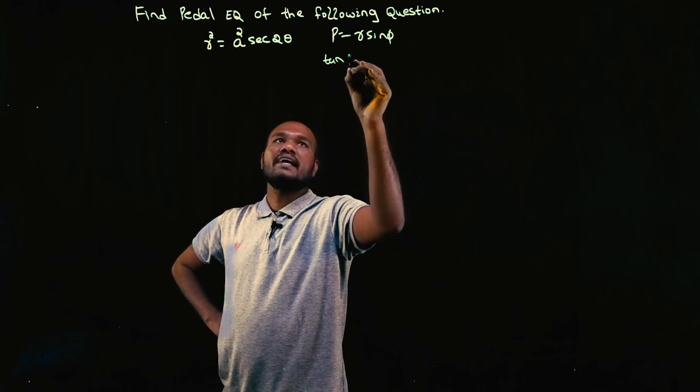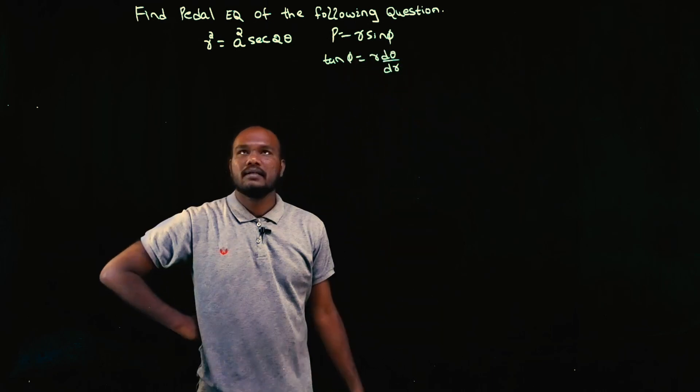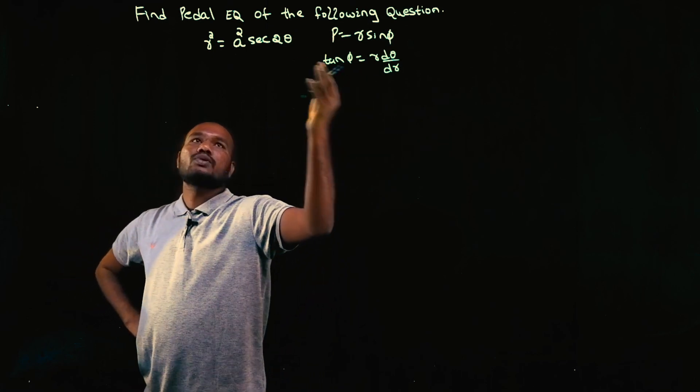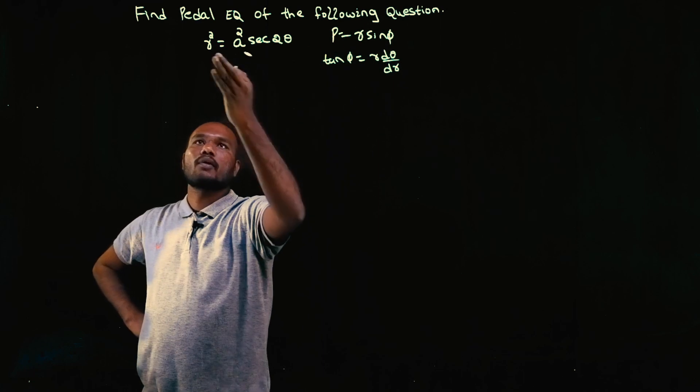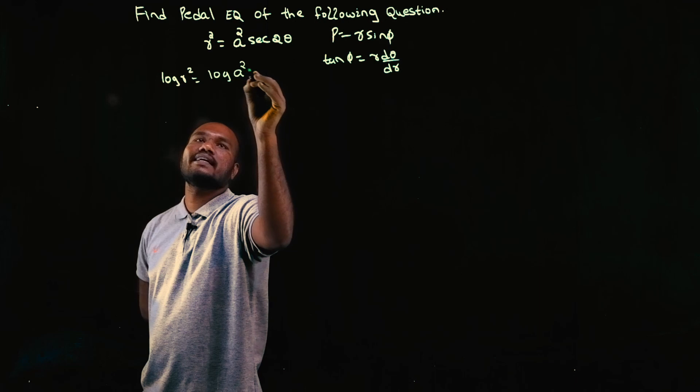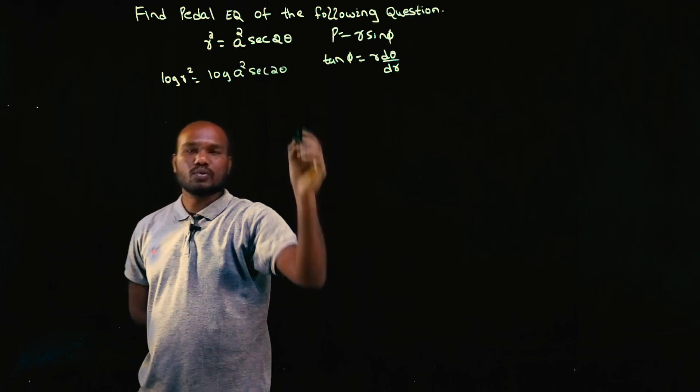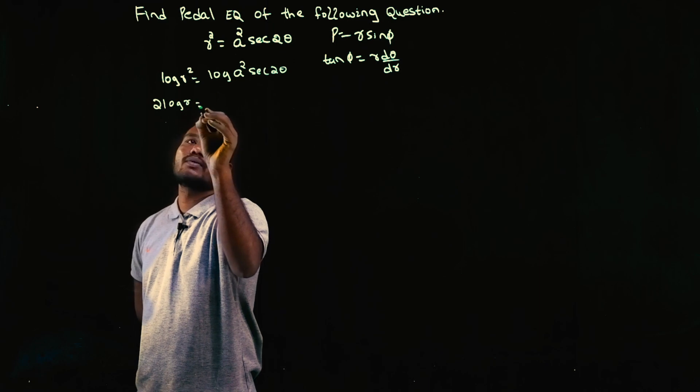To substitute r, we have to directly differentiate. The problem is r², right? So let's take log. Log r² = log a² sec²θ. This becomes 2 log r = log a² + log sec²θ, since log of a times b is log a plus log b.